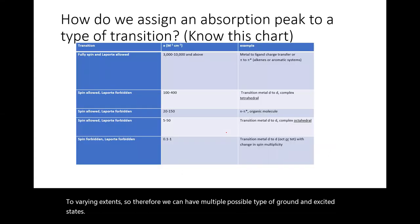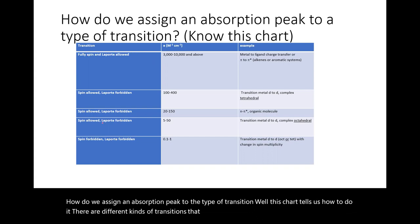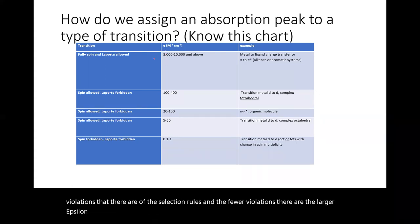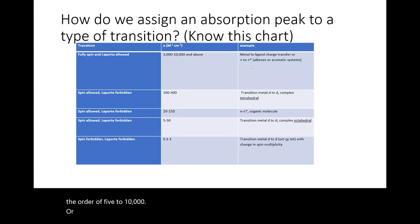How do we assign an absorption peak to the type of transition? This chart tells us: there are different kinds of transitions depending on the number of violations of the selection rules, and fewer violations mean a larger epsilon. A fully allowed band will have an epsilon on the order of 5,000 to 10,000 or more, meaning a relatively low concentration gives rise to a very intense absorbance.